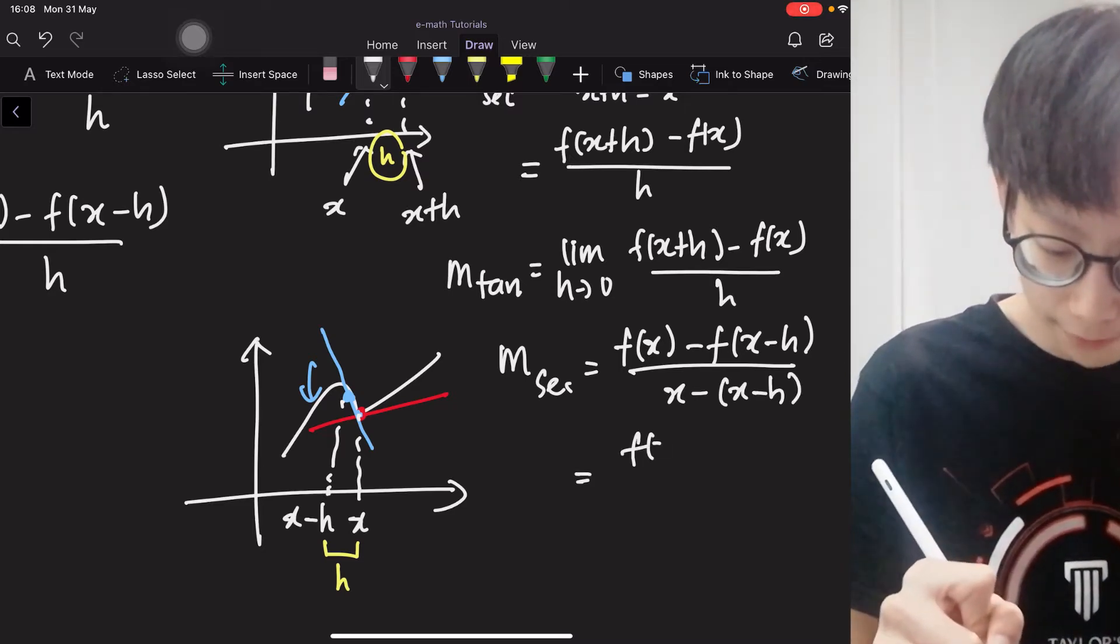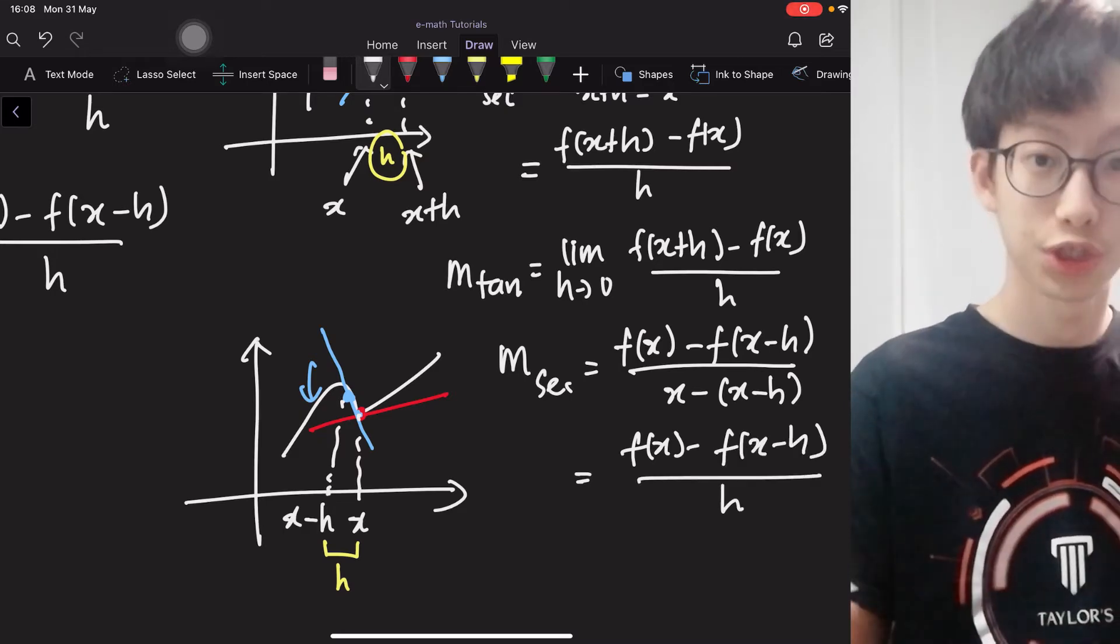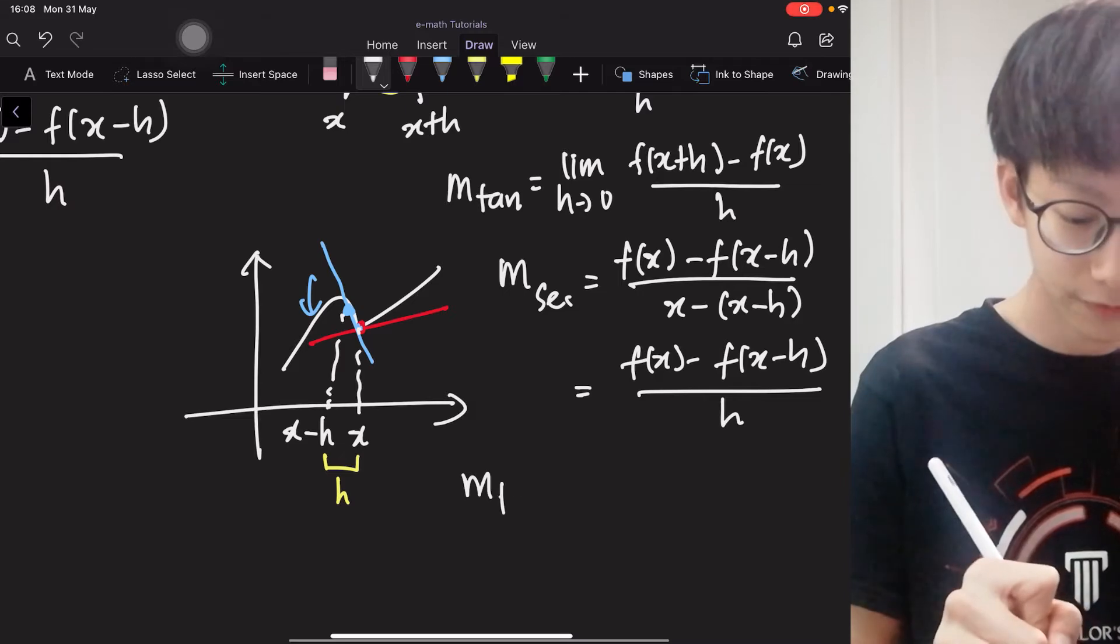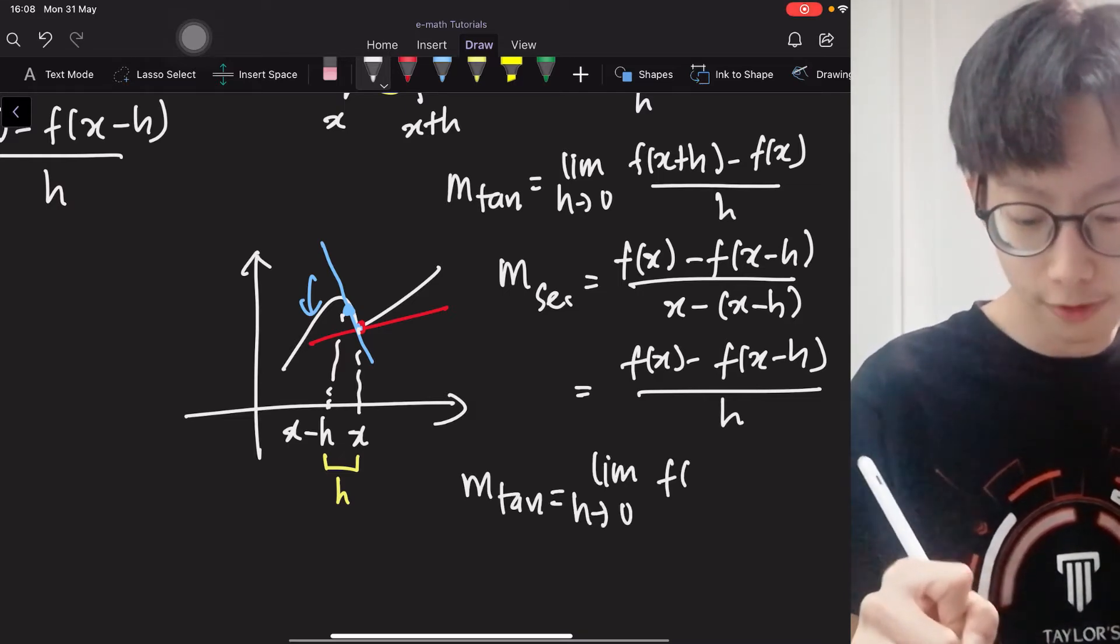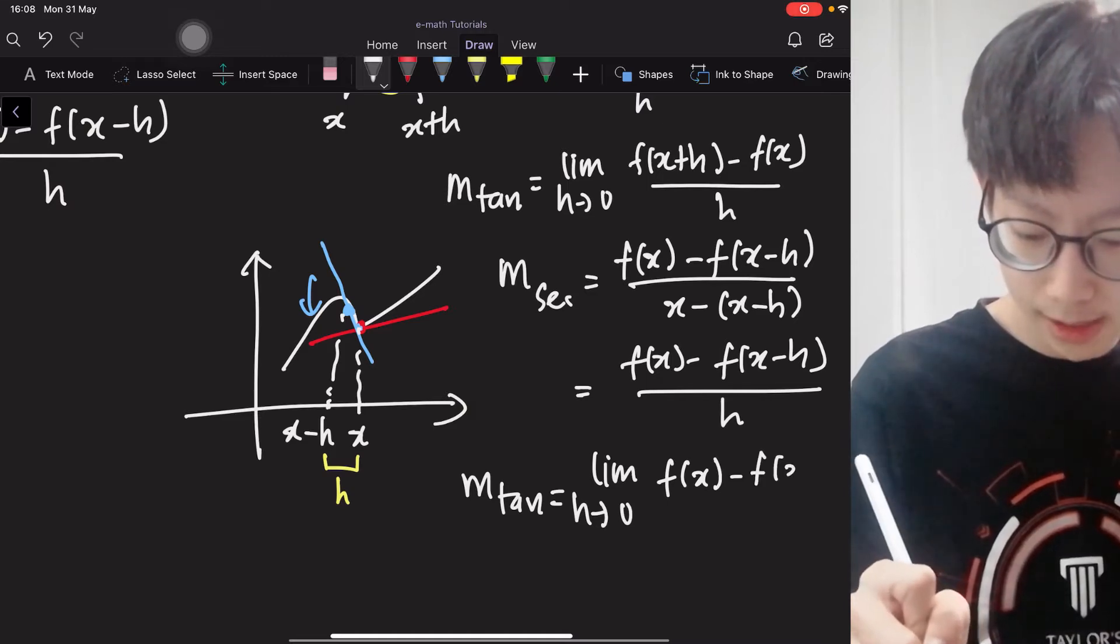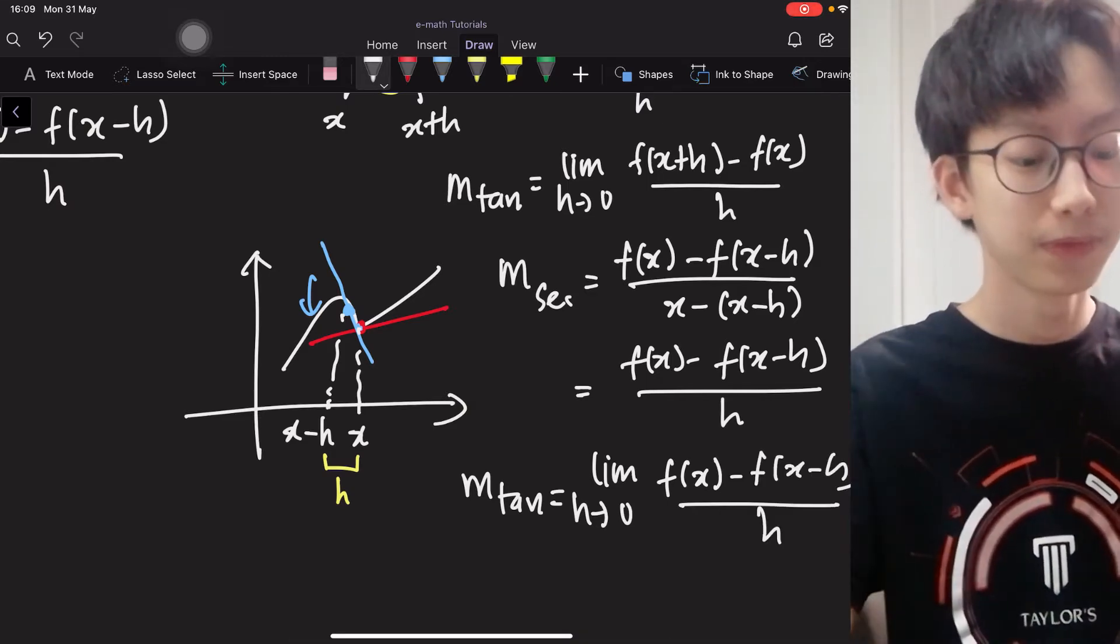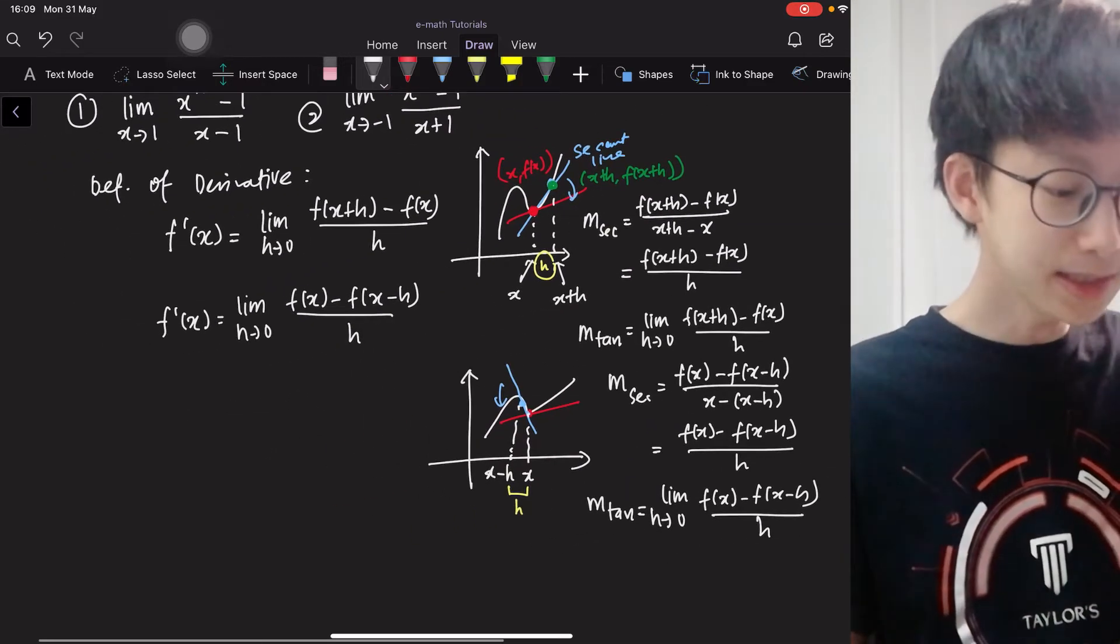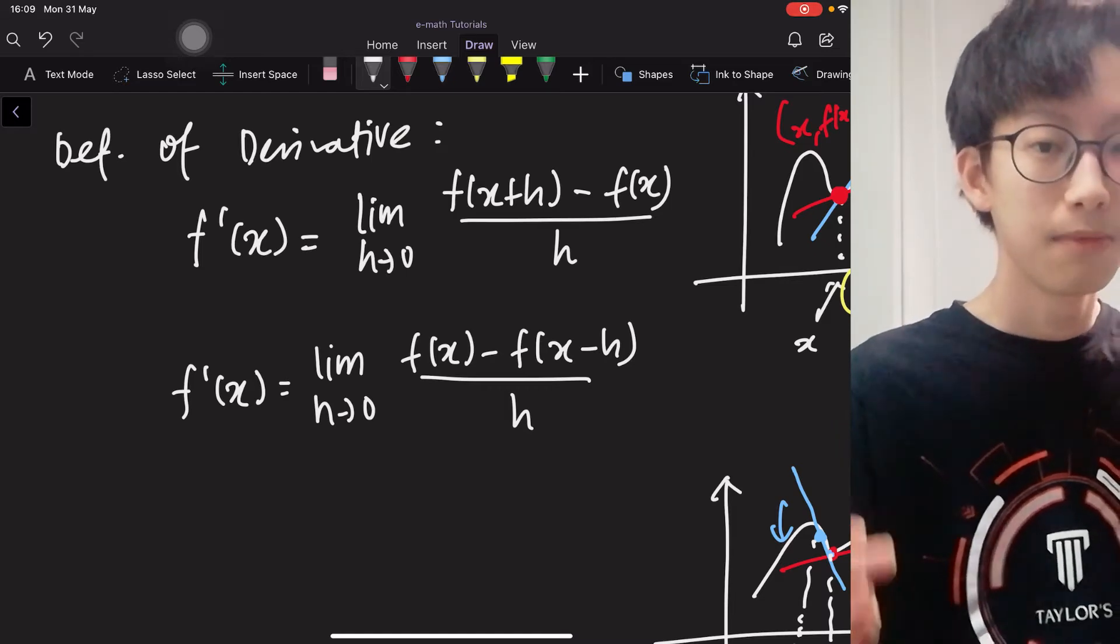Then after some algebra, you have f(x) minus f(x-h) over h, and the slope of tangent line, it is the limit as h approaches 0 of f(x) minus f(x-h) over h, which basically means the same thing. So this is how usually people write the definition of derivative.